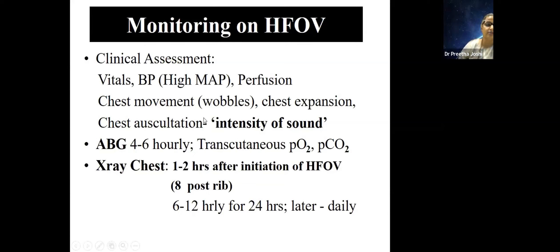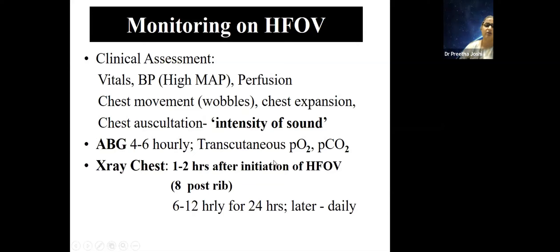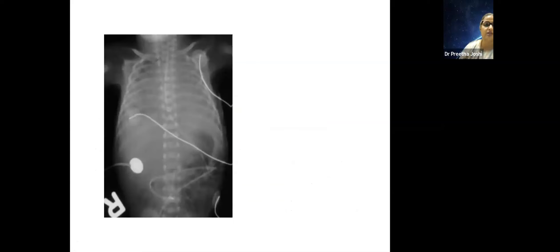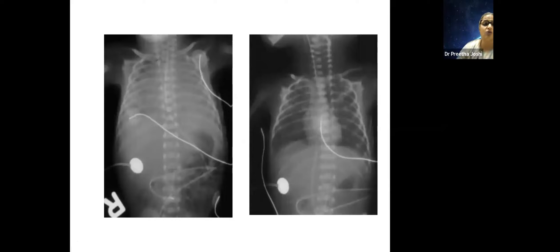Chest auscultation is very important — you can auscultate during suctioning to assess air entry. ABGs are done every 4–6 hours when initially on HFO. X-ray is done within the first hour after initiation and then every 8–12 hours; once on stable settings, once daily. The lung can go from completely under-inflated to completely over-inflated very quickly on high-frequency, so X-ray is extremely important.